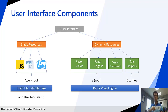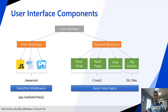An ASP.NET Core user interface consists of static resources and dynamic resources. Static resources include JavaScript files, CSS files, image files, and other static files generally located under the wwwroot folder of the web project. Static files are handled by static file middleware by default. We use app.UseStaticFiles in the configure method of the startup class to add the static file middleware to the pipeline.